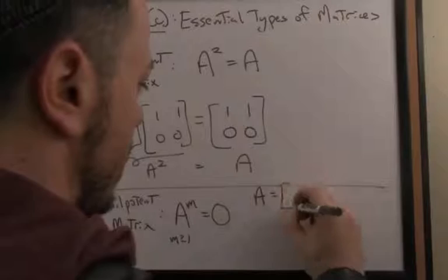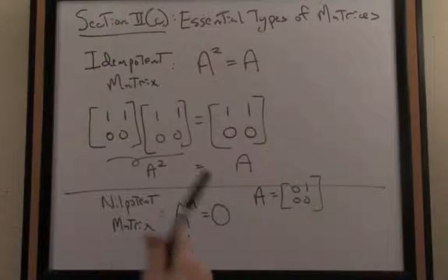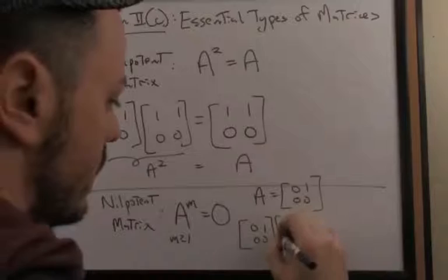For an example of a nilpotent matrix, let's consider the matrix A here: 0, 1, 0, 0. Let's see when I square this matrix. We go 0, 1, 0, 0 times itself, times 0, 1, 0, 0.